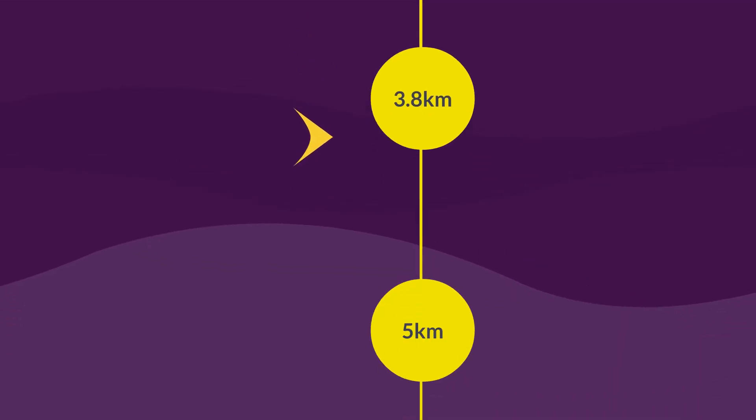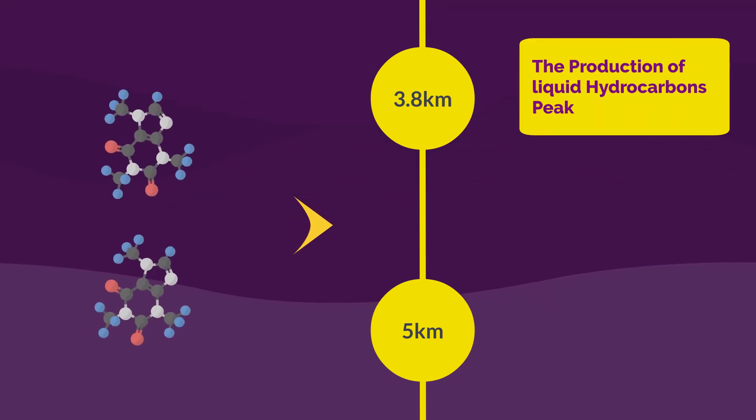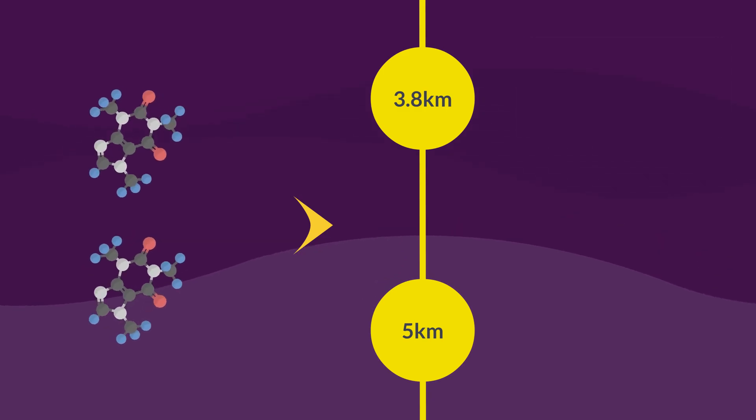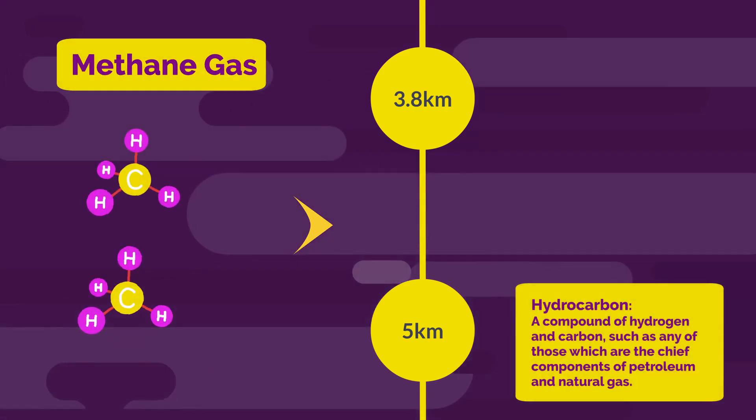When the source rock sinks further to between 3,800 and 5,000 meters, the production of liquid hydrocarbons peaks. The liquid produced becomes increasingly lighter and gradually turns into methane gas, the lightest hydrocarbon.